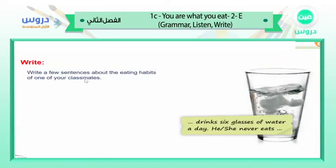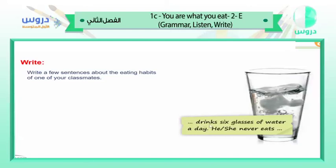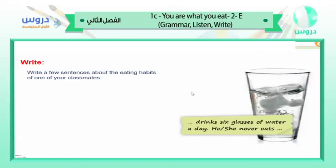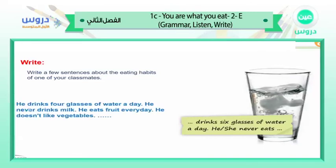Now, write a few sentences about the eating habits of one of your classmates. Choose a classmate and write about their eating habits. Use 'he drinks' or 'she drinks' as appropriate. For example: 'He drinks six glasses of water a day. He never drinks milk. He eats fruit every day. He doesn't like vegetables.'